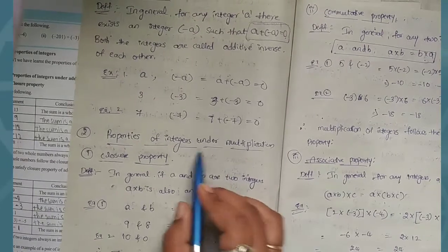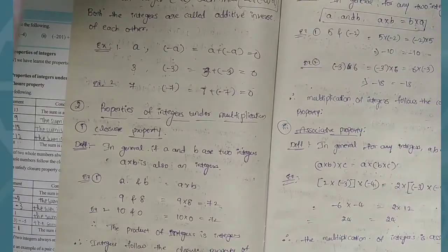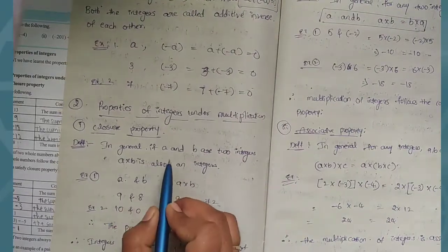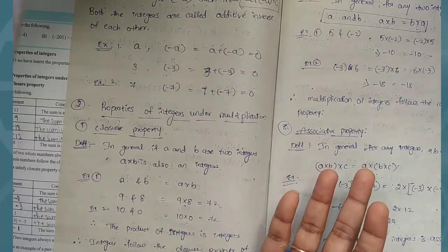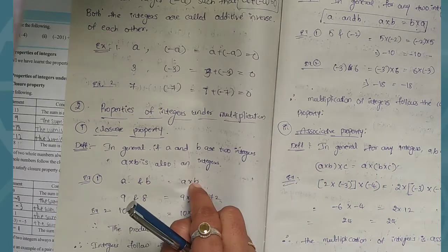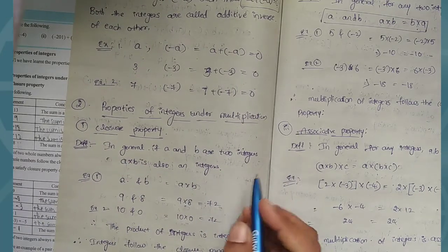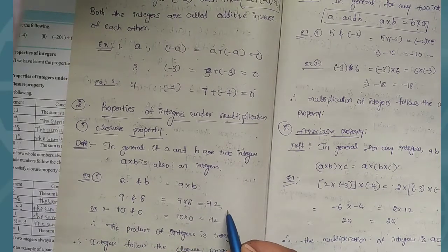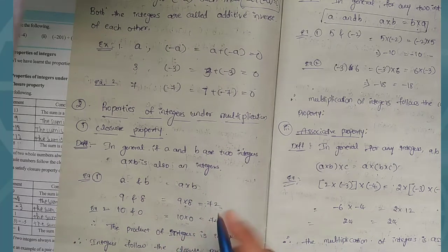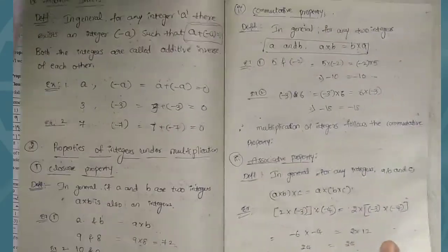Next, properties of integers under multiplication. In addition we write a plus b; in multiplication we write a into b. For example, if a equals 9 and b equals 5, their product is an integer. So integers follow the closure property under multiplication. This condition is satisfied.